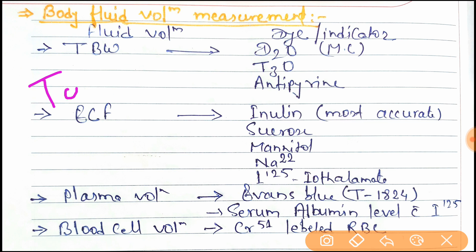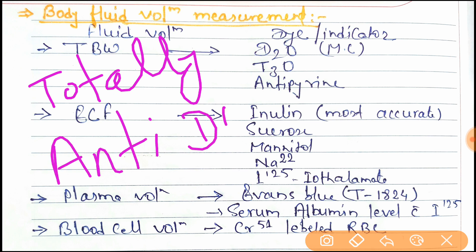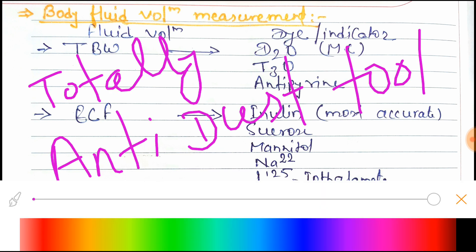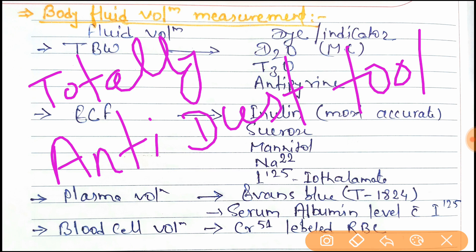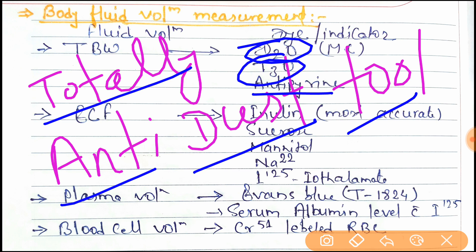The trick is 'Totally Anti-Dust Tools' - Totally indicates total body water, Anti means antipyrene, Dust means D2O, and Tools mean T3O.